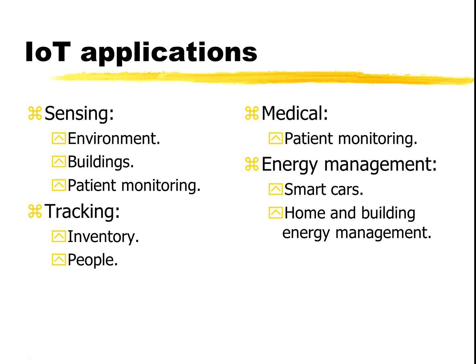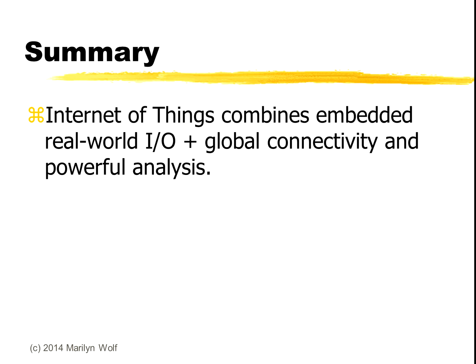If we think about application areas, there's environmental sensing, building and patient monitoring. We can use RFID to track both things and people. We can use it in medical applications. And there are all sorts of applications in energy management, both in smaller scales like smart cars and also larger scales like home and building energy management. The Internet of Things combines embedded real world IO with global connectivity and powerful analysis to make our real world devices even smarter.